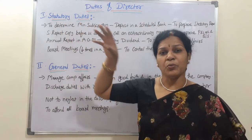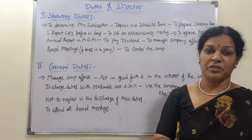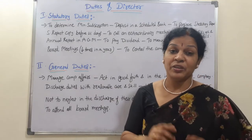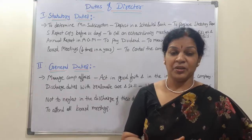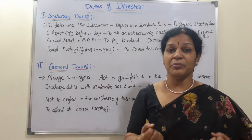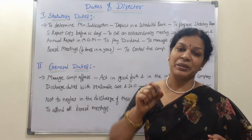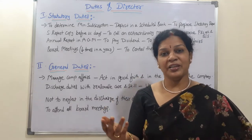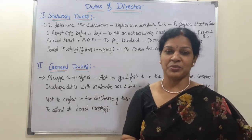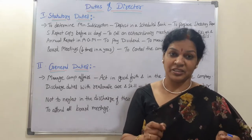The first statutory duty is to determine minimum subscription. All members give their subscription, and the board of directors must decide what the minimum subscription amount should be. Once the minimum is set, members must subscribe at least that amount; beyond that, they may subscribe more according to their wish and capability.